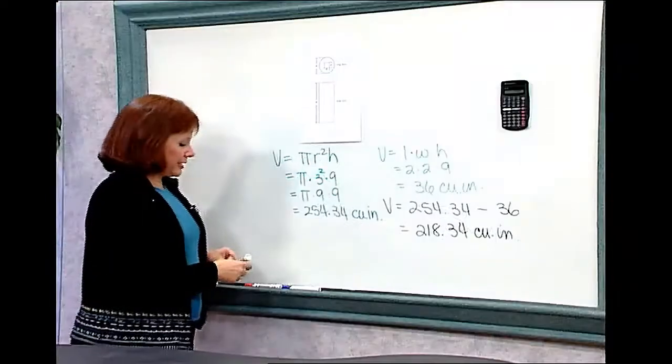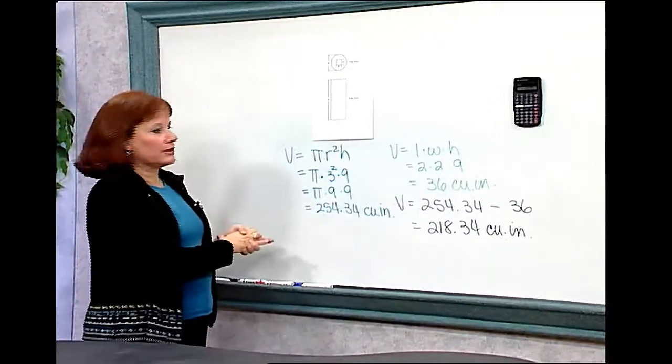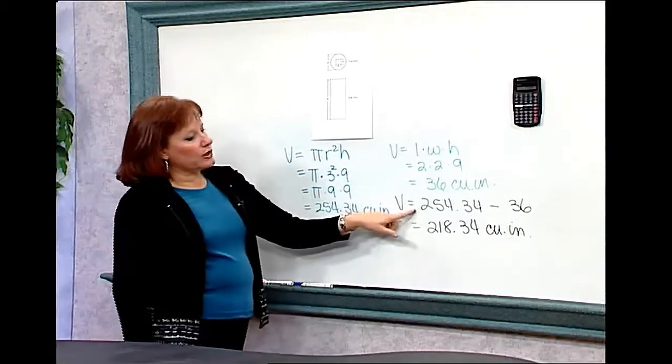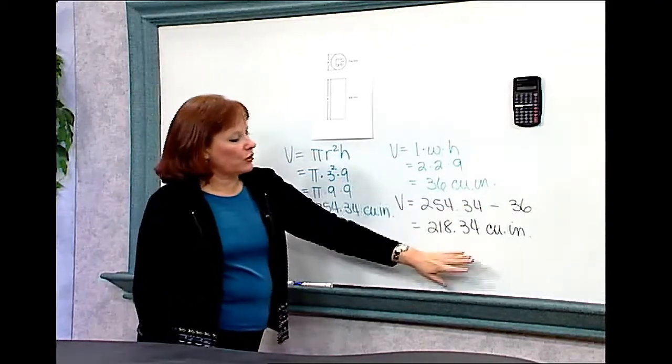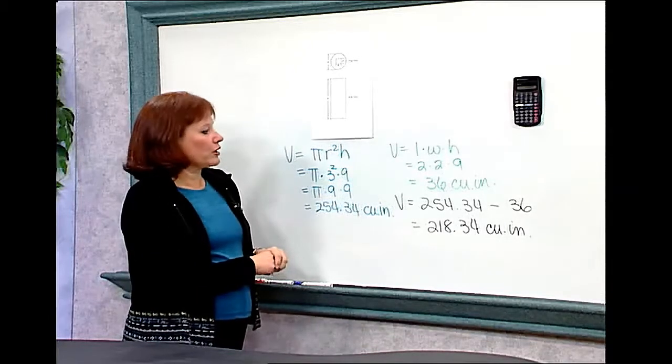Once again, I used many steps to solve this problem. I found the volume of the cylinder as if it were solid. I found the volume of the hole that's missing in the center. And I took the volume of the cylinder minus the volume of the hole and came up with a total volume of plastic of 218.34 cubic inches.